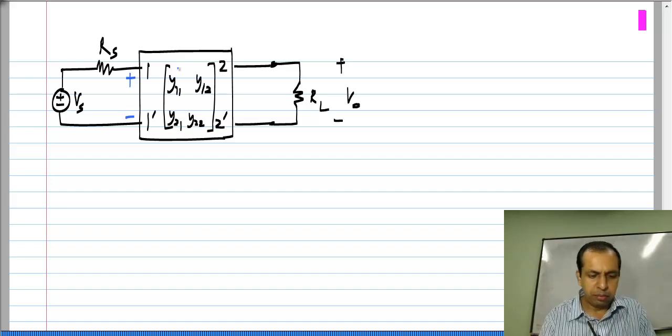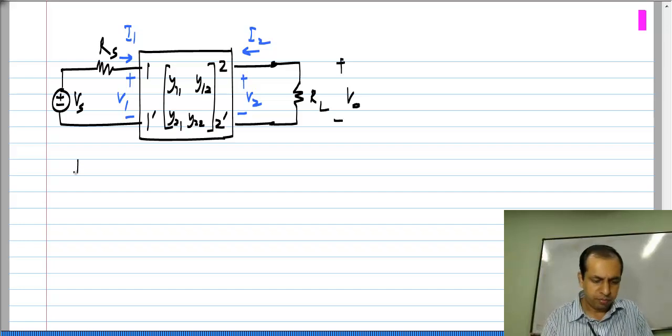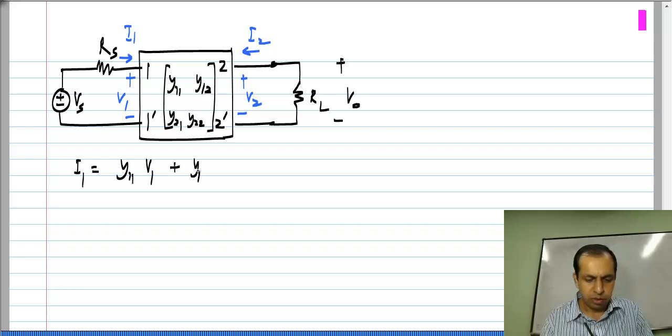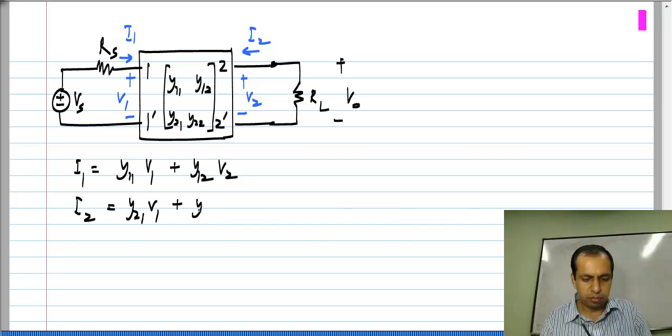Now, the Y parameters relate V 1, I 1, V 2 and I 2 and those relations we know. Its I 1 is Y 1 1 V 1 plus Y 1 2 V 2 and I 2 is Y 2 1 V 1 plus Y 2 2 V 2 and now there are constraints imposed by whatever we have connected on the two sides.